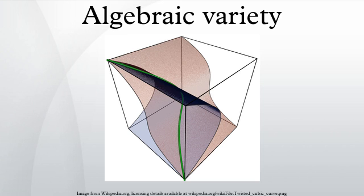The earliest successful attempt to define an algebraic variety abstractly, without an embedding, was made by André Weil. In his Foundations of Algebraic Geometry, Weil defined an abstract algebraic variety using valuations.